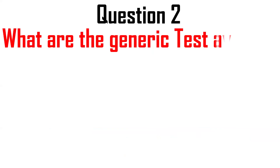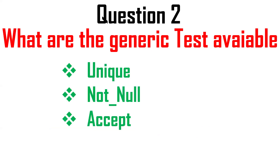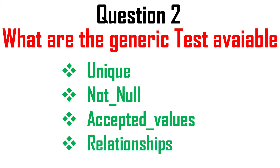The next question is: what are the generic tests available in DBT? DBT provides four pre-built generic tests: unique, not null, accepted values, and relationships. So if you want to check for duplicates, nulls, or accepted values, these four pre-built generic tests are available in DBT.